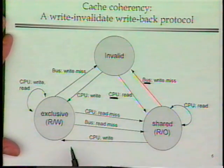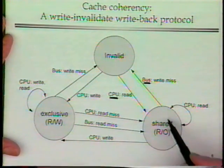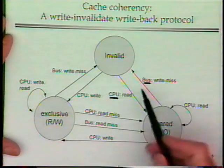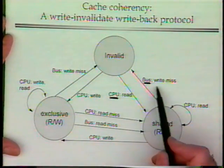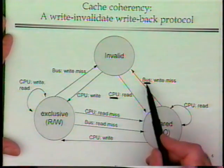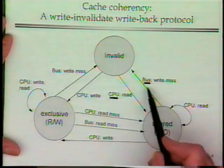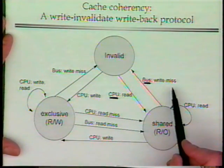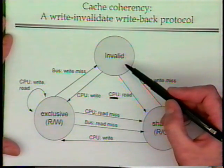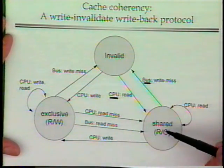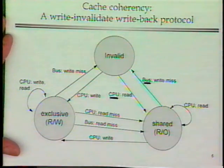If we're in the shared state and we see on the bus that somebody else is doing a write miss — they want that data in their cache for private use — we have to invalidate our copy, because they're going to modify it and our shared value will become incorrect.